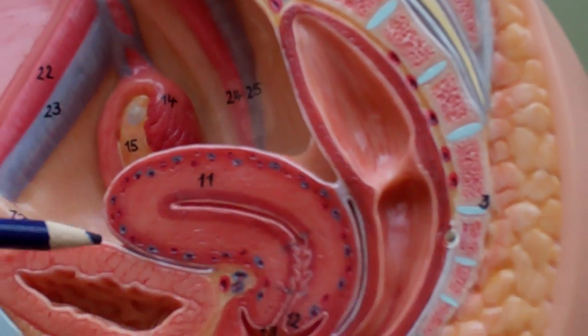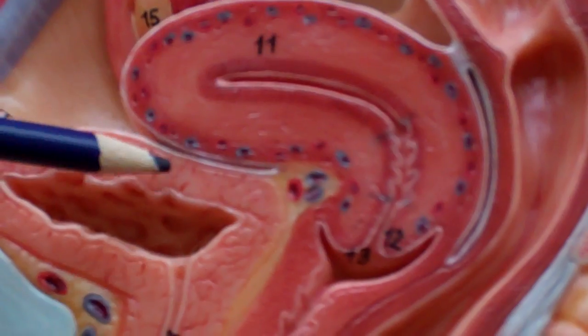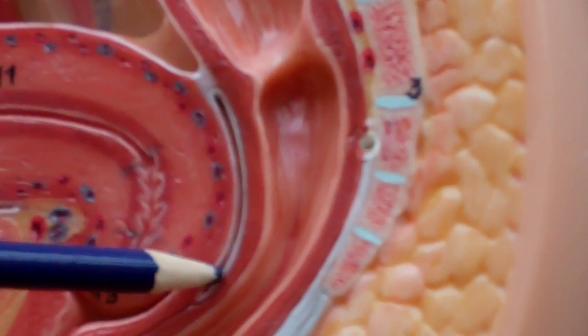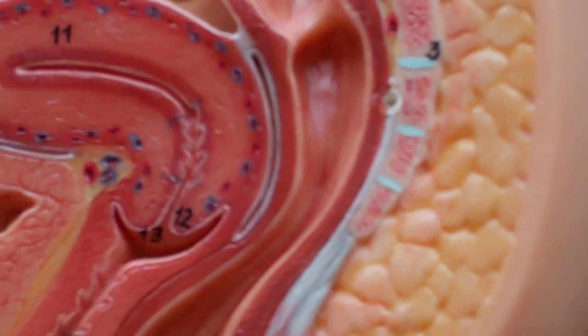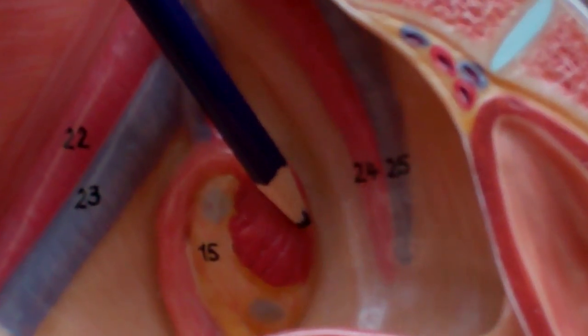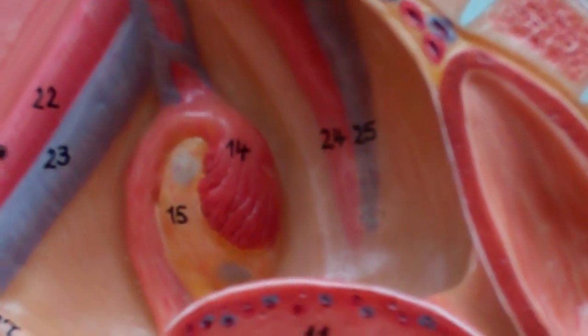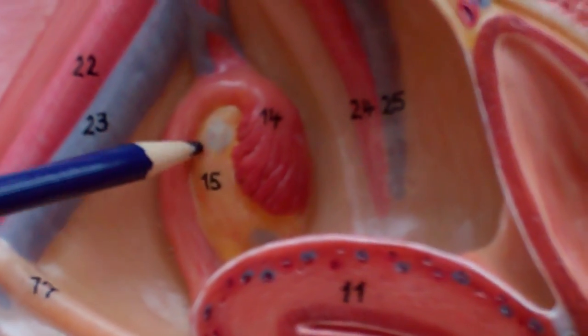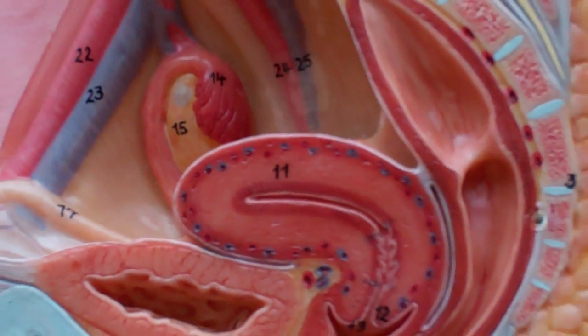We have the vesicouterine pouch, which is found between the uterus and the bladder. And then we have the rectouterine pouch, which is found between the uterus and the rectum. Again, you have the fimbriae back here. The infundibulum, which is the bend. The ovary in yellow. And the uterine tube's not really good on this one.